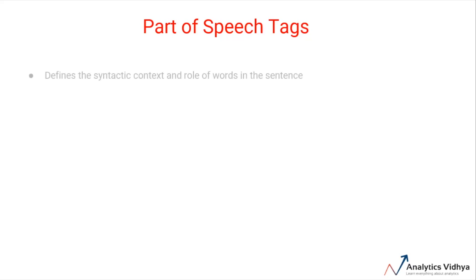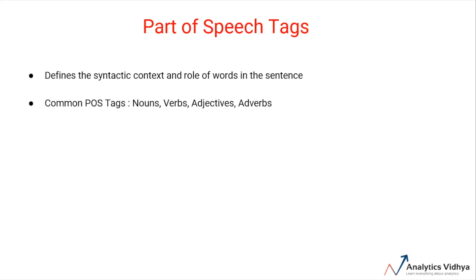Part of speech tags are the properties of a word which define their main context, their function and usage in a sentence. Some of the commonly used part of speech tags are nouns, which define any object or entity, verbs which define some action, and adjectives or adverbs which act as modifiers, quantifiers or intensifiers in any sentence.